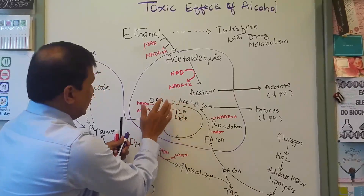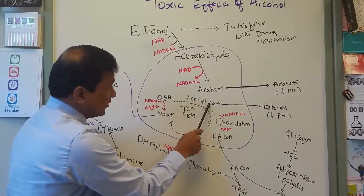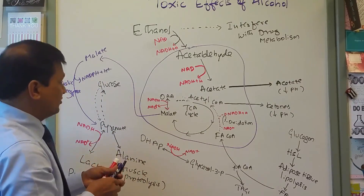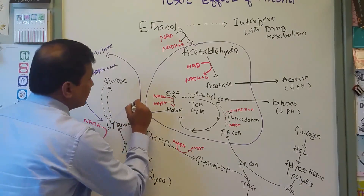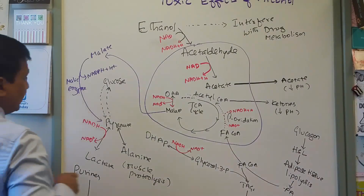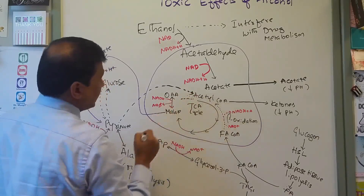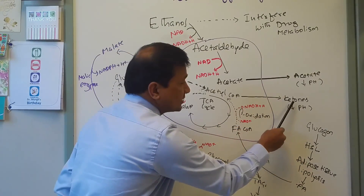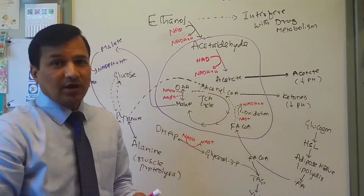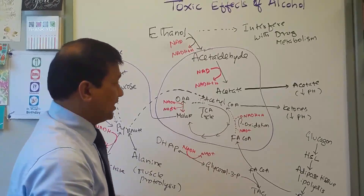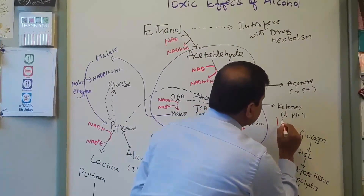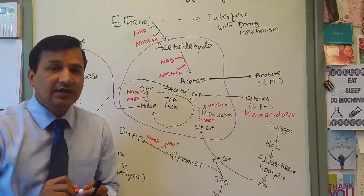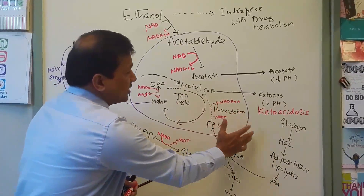With the TCA cycle slowed and less oxaloacetate available, acetyl-CoA builds up. Some pyruvate enters the mitochondrial matrix and forms acetyl-CoA, but acetyl-CoA is not fully consumed. So some acetyl-CoA is diverted into ketone body synthesis. These ketone bodies are secreted into the blood, decreasing blood pH and giving rise to ketoacidosis, which is one of the signs seen in chronic alcoholics.